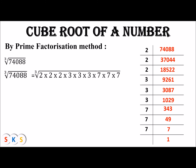We can write 74,088 as two × two × two × three × three × three × seven × seven × seven. To find the cube root, we make groups of three identical prime factors. The first group is (2, 2, 2), the next group is (3, 3, 3), and the last group is (7, 7, 7). From each group we take one number.